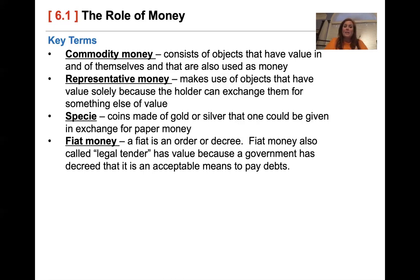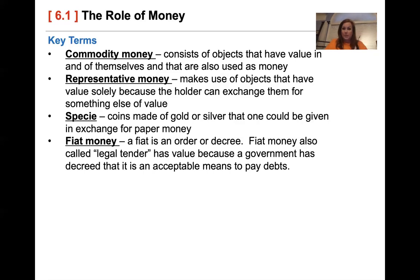Fiat money is money that is an order or decree. Our currency in the United States is both representative money and fiat money. If you look on the back of the bill, it literally says 'Federal Reserve Note' — legal tender of the United States. It has to be backed by the government in order to be considered money.